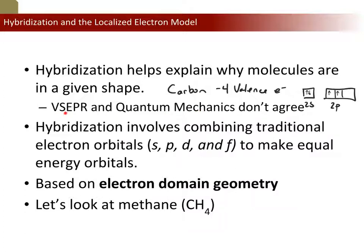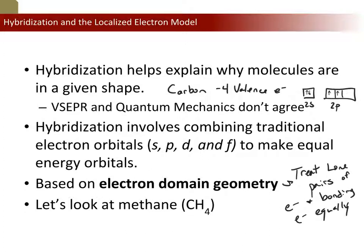But we know VSEPR says that carbon can make up to four single bonds. Those two don't necessarily agree. VSEPR tells us it can make four bonds; according to quantum mechanics, it can only make two. So hybridization basically combines S and P orbitals into a new set of orbitals that put them all on equal standing, allowing you to spread out the electrons evenly. Hybridization takes into account only the electron domain geometry, treating lone pairs and bonding pairs of electrons equally.